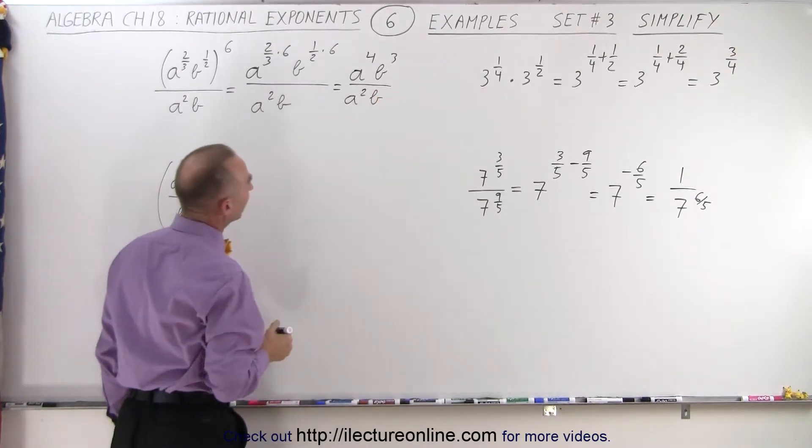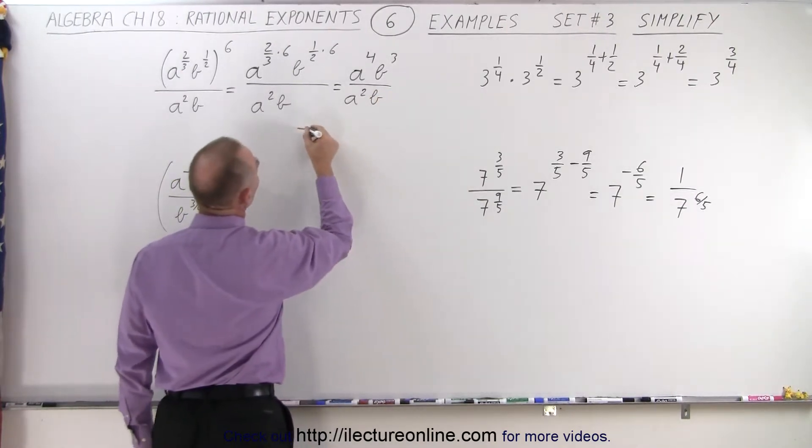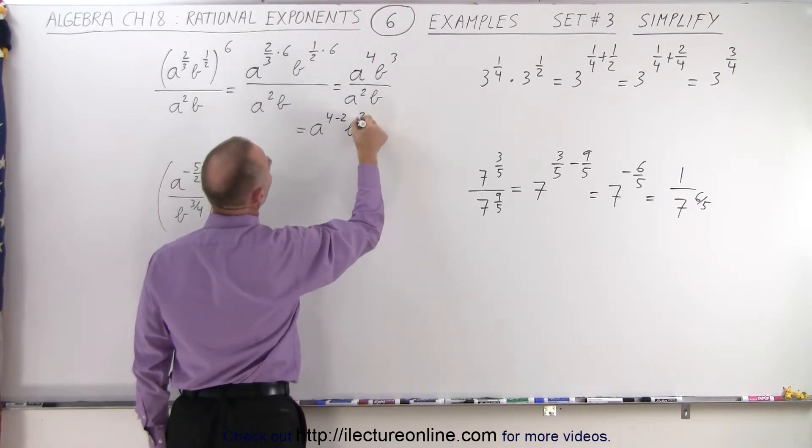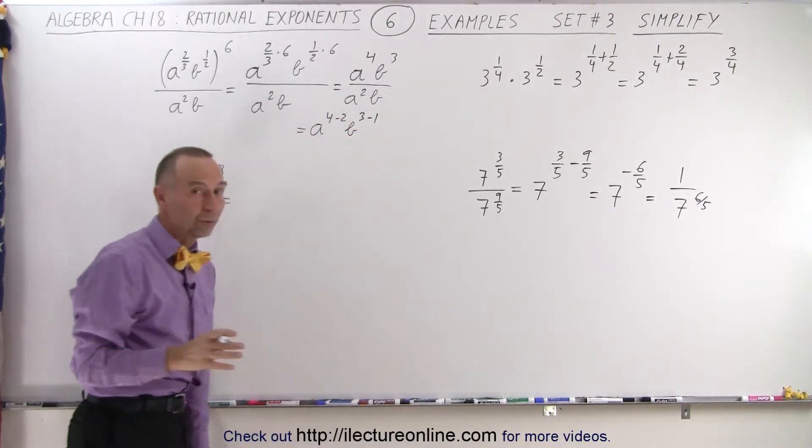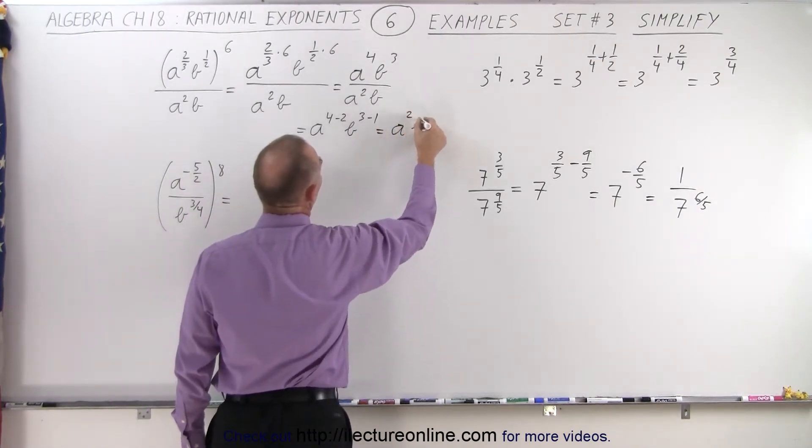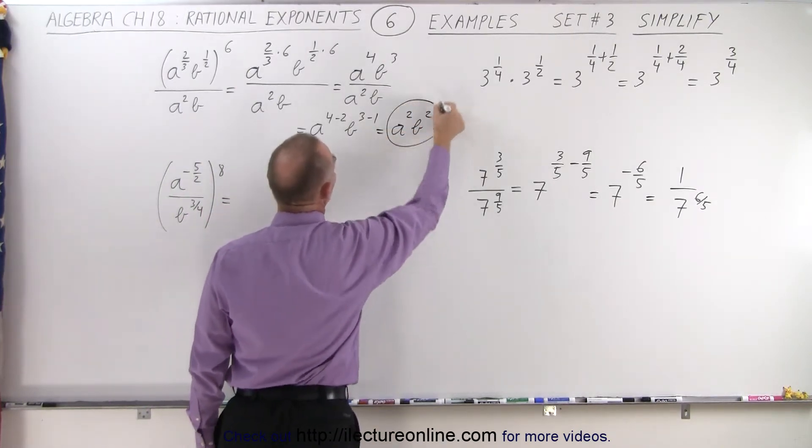Which can be written as, this is a to the 4 minus 2, b to the 3 minus 1. Because when we divide, we subtract exponents. And finally, this can be written as a squared b squared as our final simplified answer.